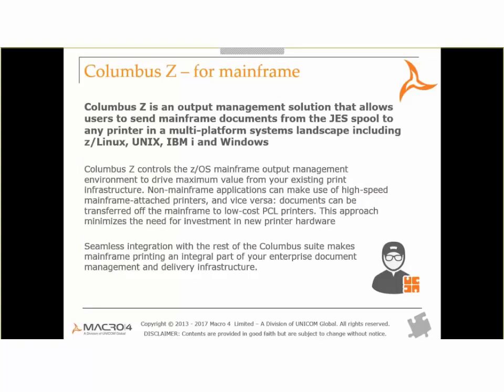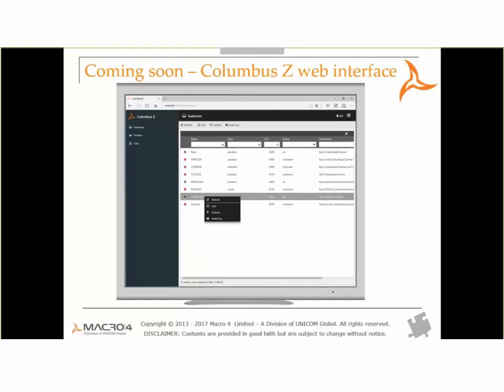We also have a mainframe sister product called Columbus Z. It runs natively on z/OS and allows you to manage and access jobs on the JES spool. It integrates with the rest of the Columbus suite — you can send jobs from Z to OM and from Z to DW. There's a brand-new web interface coming out soon based on the same technology as Columbus Administrator.